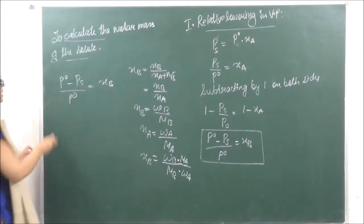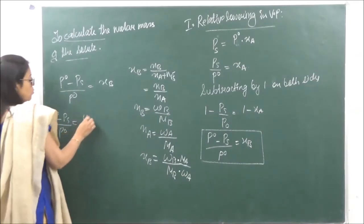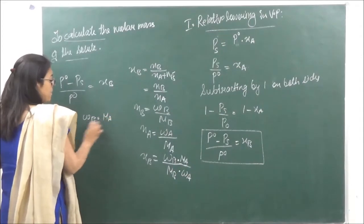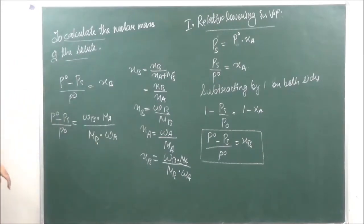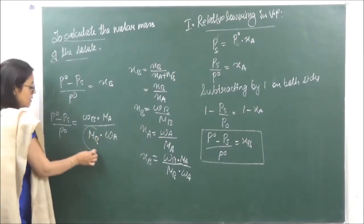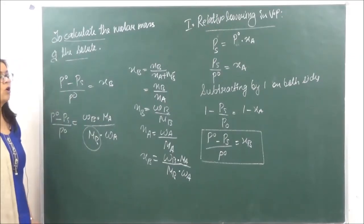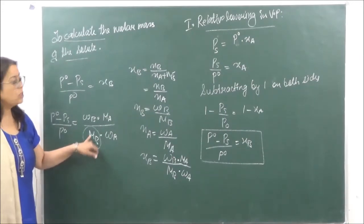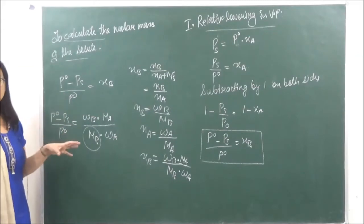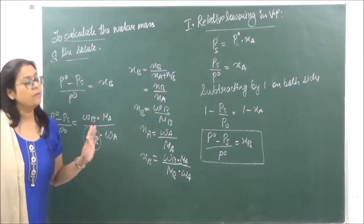From the expression (P naught − Ps) / P naught = WB × MA / (MB × WA), MB is the molar mass of the non-volatile solute, which can be calculated. We will do all the questions together in the next class.